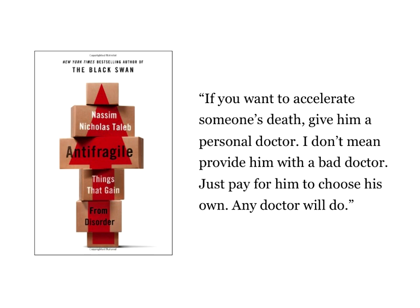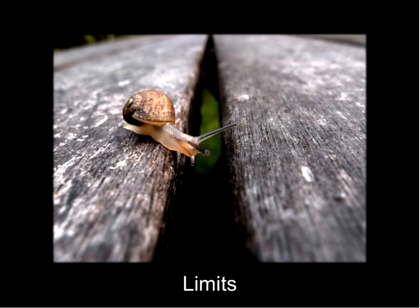And Nassim Taleb wrote a great book called The Black Swan and another called Anti-Fragile. He actually goes so far as to say, if you want to accelerate someone's death, give him a personal doctor. He doesn't mean provide him with a bad doctor — just pay for him to choose his own. Any doctor will do. So I want to come back to that in a moment, but we're going to keep moving and talk a little bit about limits — how do we understand our own limits, the limits of our organization, and to what degree change is possible?